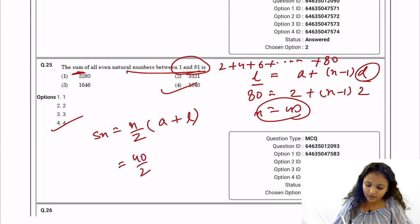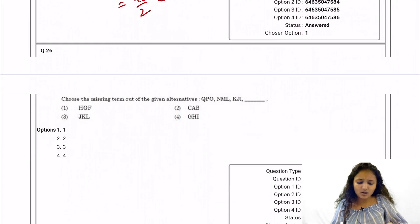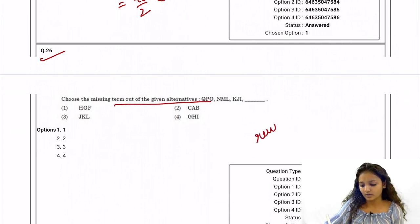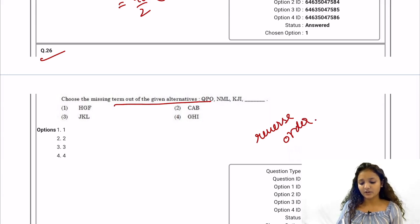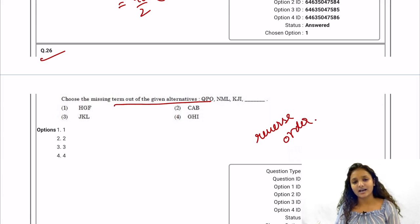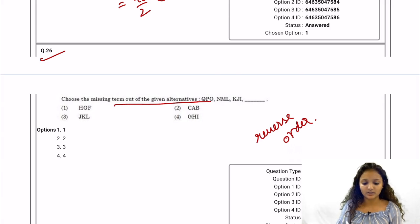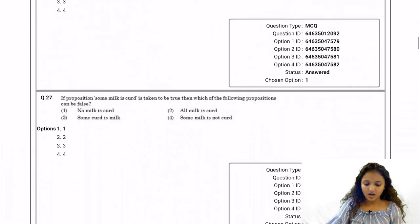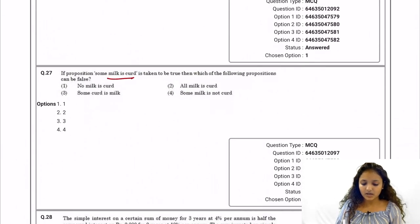Question 25 — missing term: the series is given in reverse order: QPO, NML, KJI, and continuing in reverse order the next group is HGF. So the correct answer is option one. Question 27: If the proposition 'Some milk is curved' is taken to be true, which proposition can be false? The answer given by NTA is 'No milk is curved' — option number one.